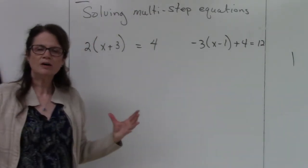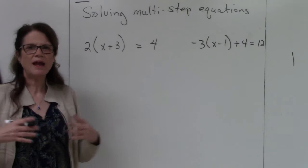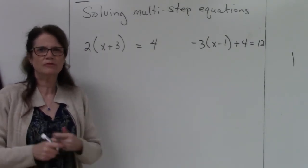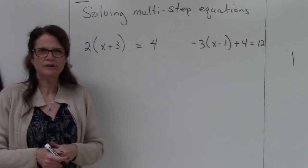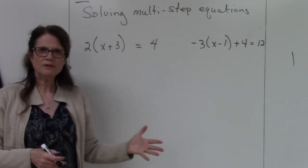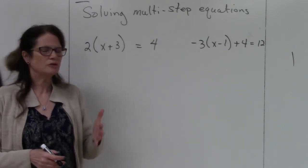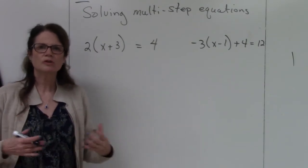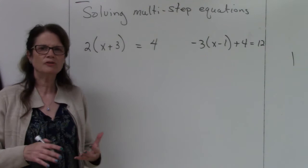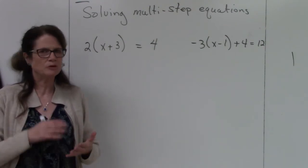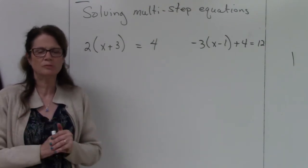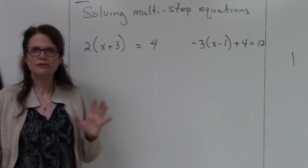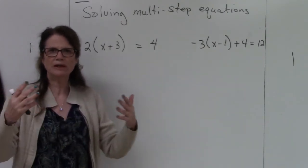All right, so now we're just adding layers to our equations. This is what's considered solving multi-step equations. We started with one-step equations, then transitioned to two-step equations, and now we're doing multi-step equations. With multi-step equations you may have to use the distributive property, which means you multiply through the parentheses, and then move things across the equal sign.